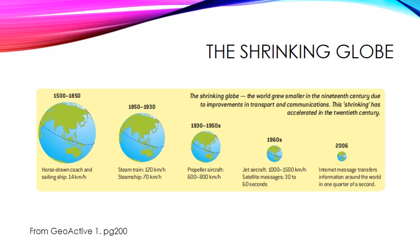This diagram shows what we refer to as the shrinking globe. It doesn't mean the world is getting smaller, but it means improvements in transport and technology have made it easier to get to the other side of the world or communicate with it. In the 1500s, horse-drawn coaches and sailing ships travelled 14 kilometres an hour, whereas now we can send internet messages that transfer around the world within a second. Just pause and have a look at how these improvements in technology have contributed to the shrinking globe.